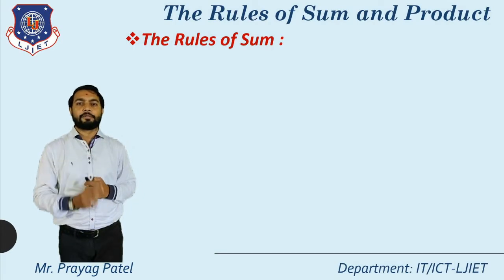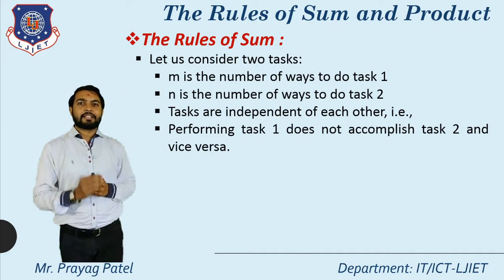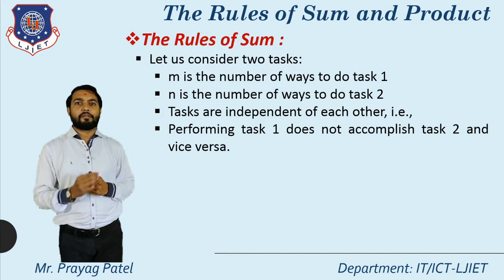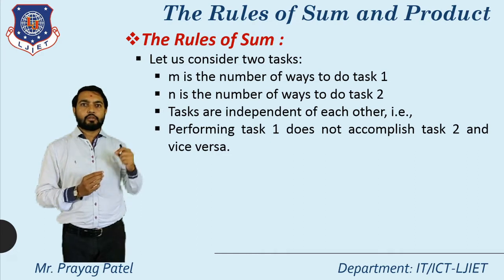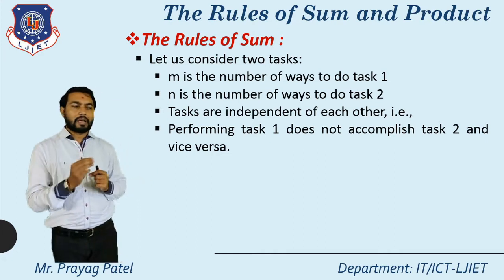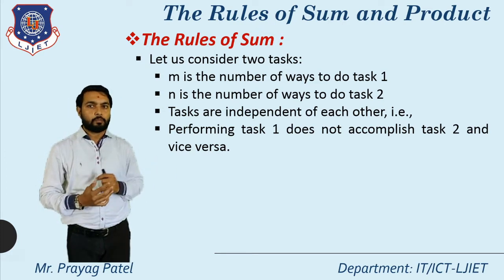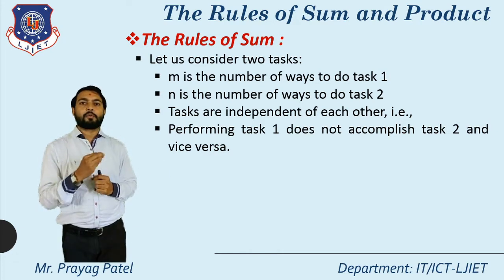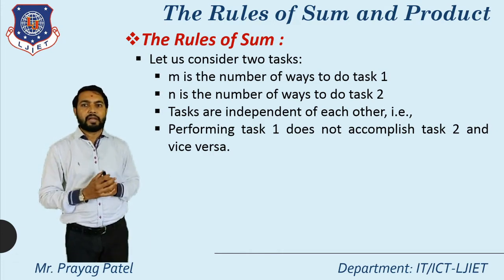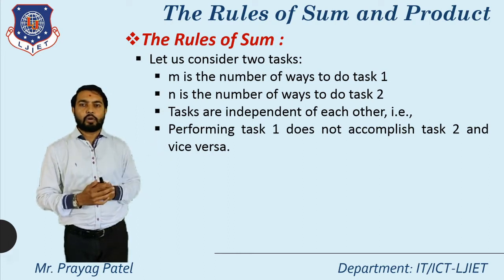The first one is the rule of sum. Let us consider two tasks: m is the number of ways to do task one, and n is the number of ways to do task two. So we have task one and task two, with m ways available for task one and n ways available for task two. The tasks are independent of each other.